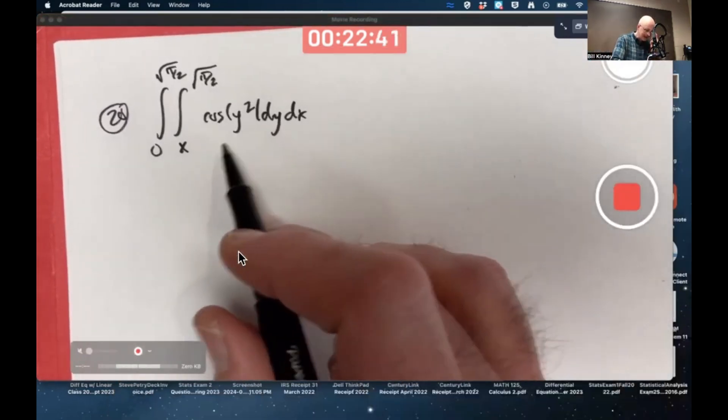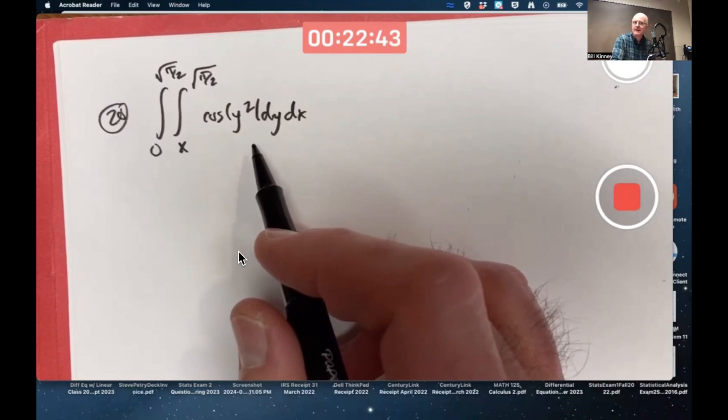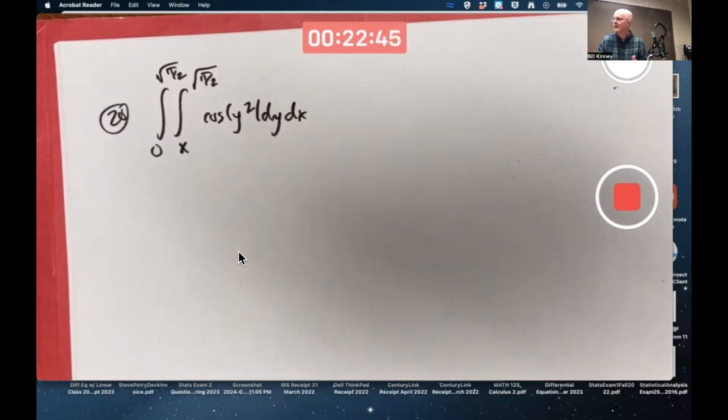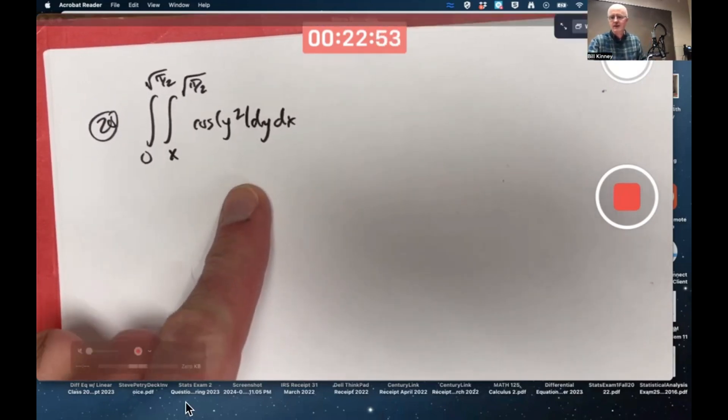Okay, it's impossible to do it this way effectively because cosine of y squared has no elementary antiderivative. If you didn't know what to say, you can say that. You can write that down right now if you want.